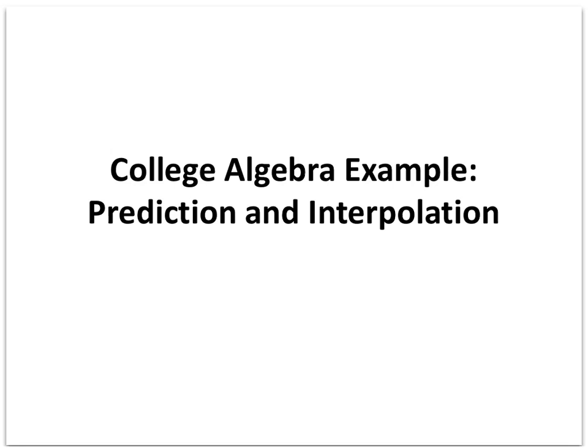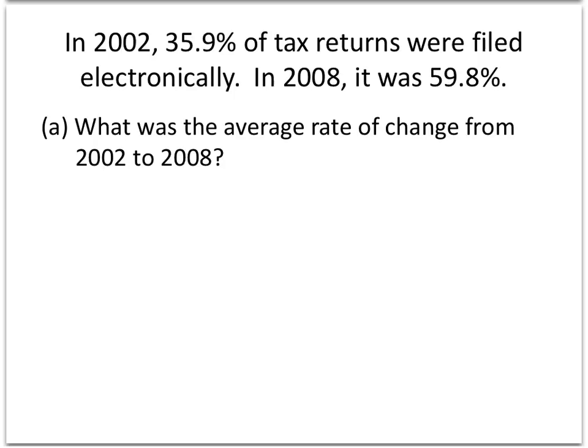In this video, we're going to show an example of a very common application of the average rate of change called prediction and interpolation. So let's look at this example. In 2002, 35.9% of tax returns were filed electronically, and in 2008 it was 59.8%.